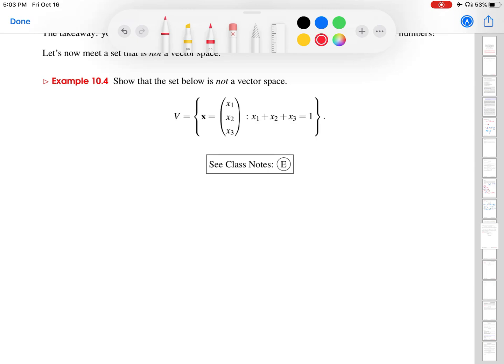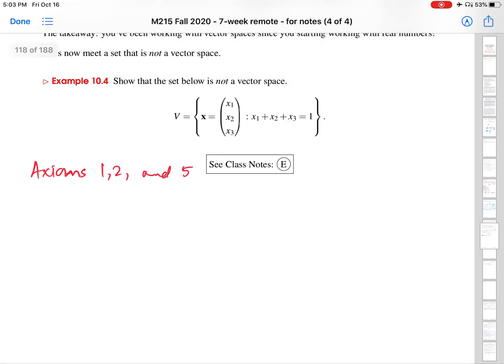So going to this example here, V is given as a set of vectors with three components whose components are related by this equation. You can see how there are going to be all sorts of issues with this being a vector space because if we start working through the axioms, many of them will fail. As a little tip, axiom one, two, and five are very commonly not satisfied by spaces that are not vector spaces.